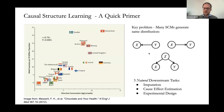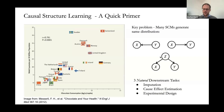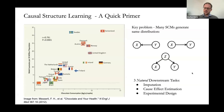Without making a causal assumption, the best you can do is say you don't know the answer. If you answer the question of what happens when chocolate consumption is set to a hundred, you are implicitly making one of these structural assumptions. Once we've made this assumption about the relationship between variables, we typically have three natural downstream tasks: imputation of data with missing values that are missing not at random, cause-effect estimation, and experimental design. In the following I'll talk more about experimental design as a downstream task of learning causal structure.